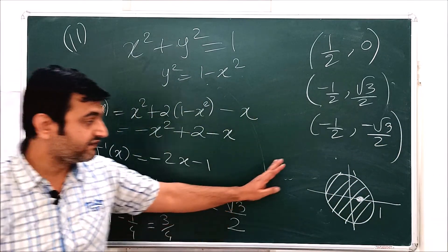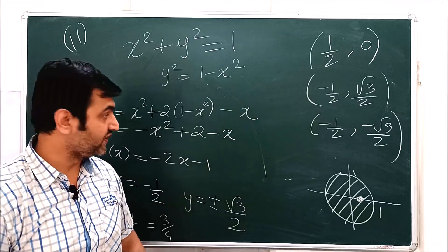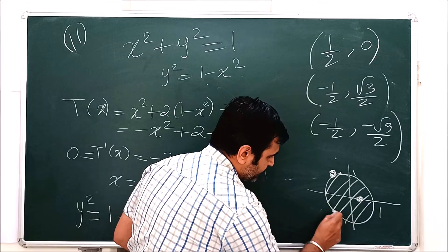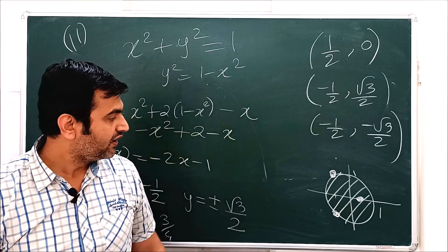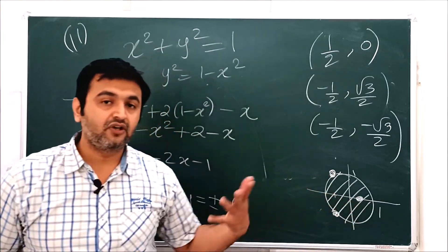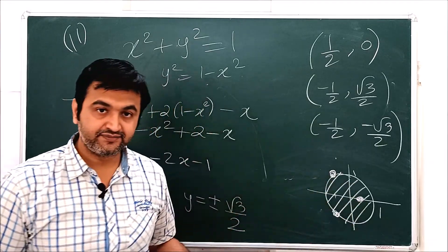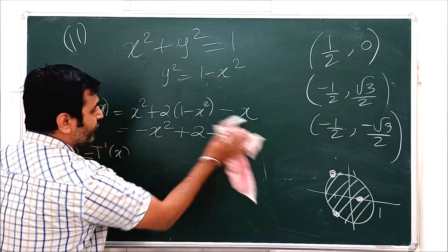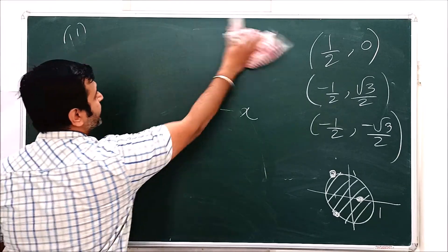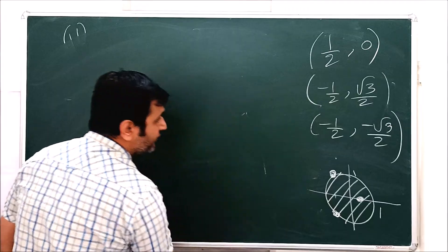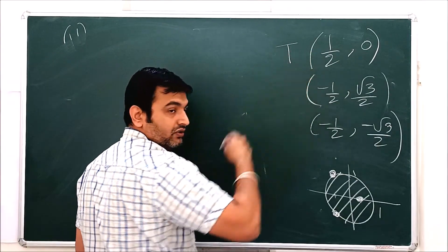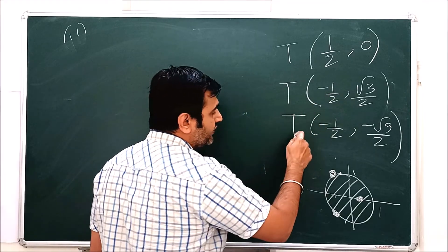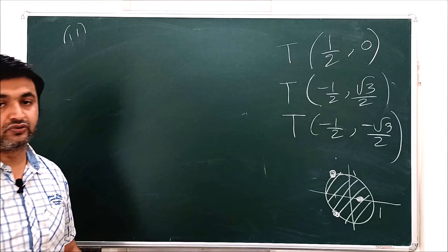So from all infinitely many points on the closed disk, we reduced to just three candidate points: (1/2, 0) from the interior, and (−1/2, √3/2) and (−1/2, −√3/2) from the boundary. Your second homework: compute T at each of these three points and determine which is the hottest and which is the coldest.